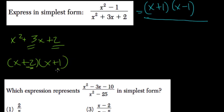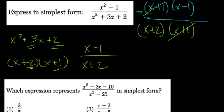The factors 2 and 1 multiply to 2 and add to 3. So that works. We have x plus 2 times x plus 1. The x plus 1s cancel out, and we're left with x minus 1 over x plus 2.